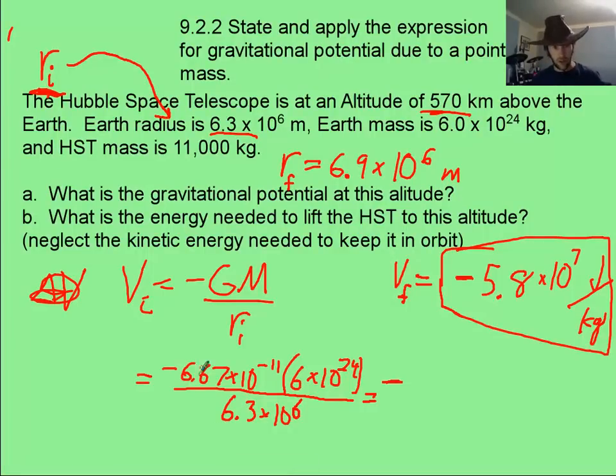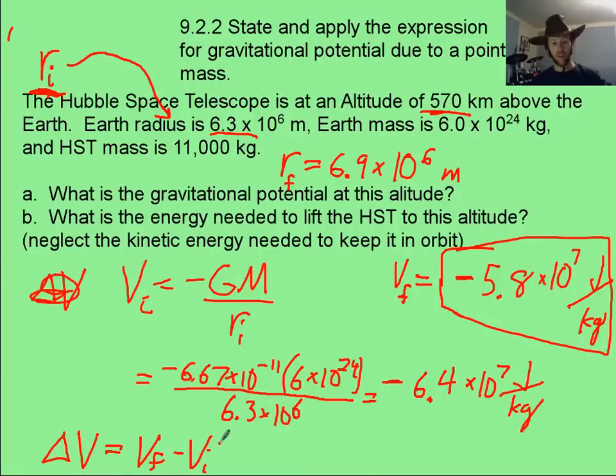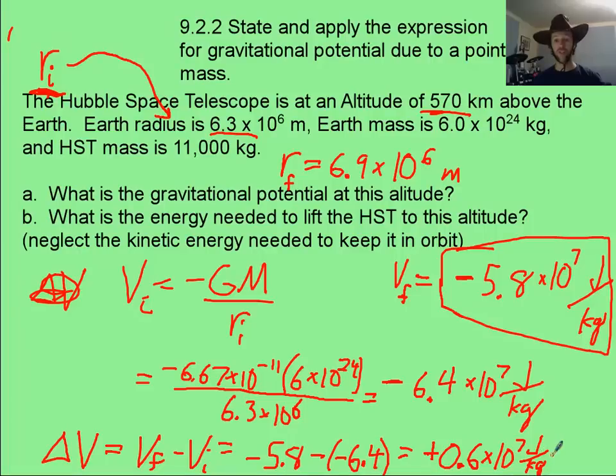Now, I went ahead and, hopefully you paused it, and I went ahead and plugged in the numbers for the initial potential at the surface of the Earth, and I ended up with a larger negative number, because it's closer to the Earth, of 6.4 times 10 to the 7th joules per kilogram. And you then needed to take the change in potential of final minus initial, and you end up with a negative 5.8 minus a negative 6.4. I'm leaving out my exponents. And you're going to be left with a change of a positive, because it is getting more positive as it goes up. So, 0.6 times 10 to the 7th joules per kilogram. That is the change in potential as you raise up the Hubble Space Telescope. That's the only part of it. More to come.